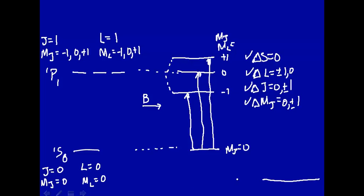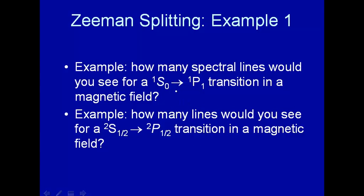So it looks like all three of those transitions will be allowed. So if we look at the spectrum intensity versus frequency, we'll see three lines, one, two, three. So to answer that question, how many lines, we would expect to see three. Now let's go down here and look for this kind of transition, a doublet S₁/₂ to a doublet P₁/₂ transition.